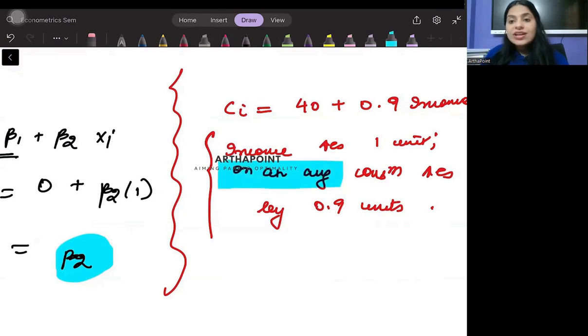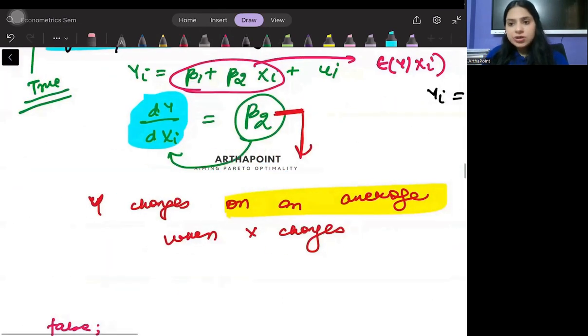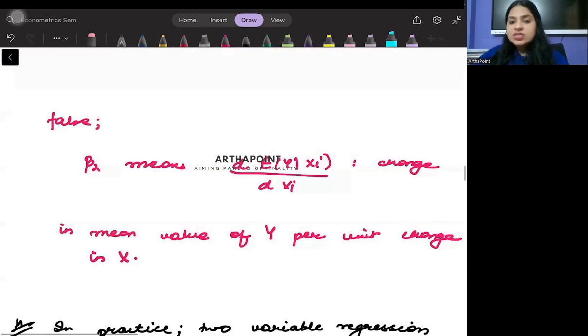So we use the term on an average, that's the important term here. Am I clear with it? So again, this statement would be a false statement. It would be an incorrect statement.